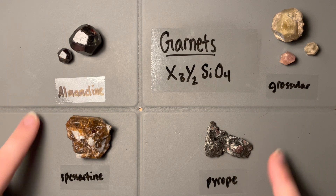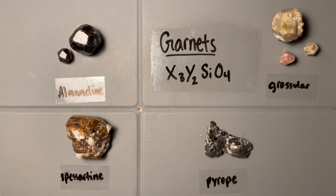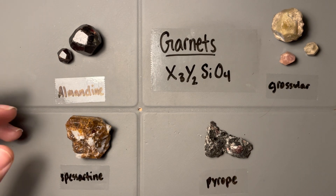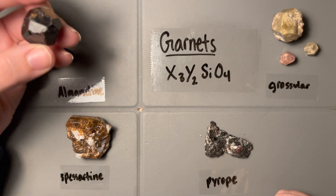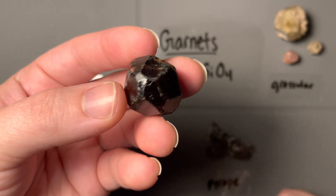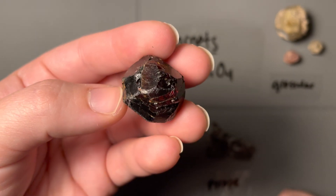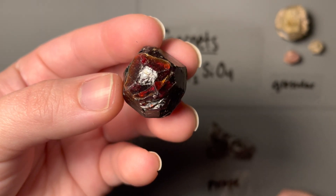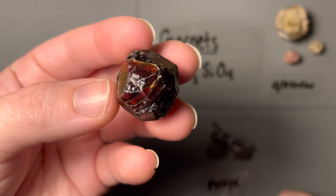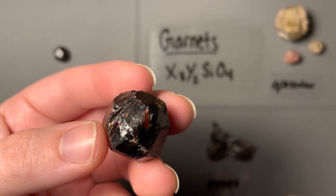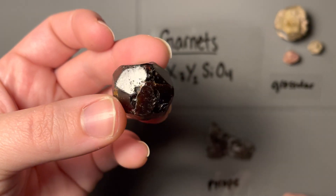With grossular and almandine, the main difference you might notice is color. All these different garnets can have a huge variety of colors, but these are the most general ones. I remember almandine as usually being the traditional garnet — this really dark, super dark red, almost black in color. But you can see with these fractures that it's really a cherry-wine red, the color you'd think of on birthstone charts. This is the garnet most people picture.